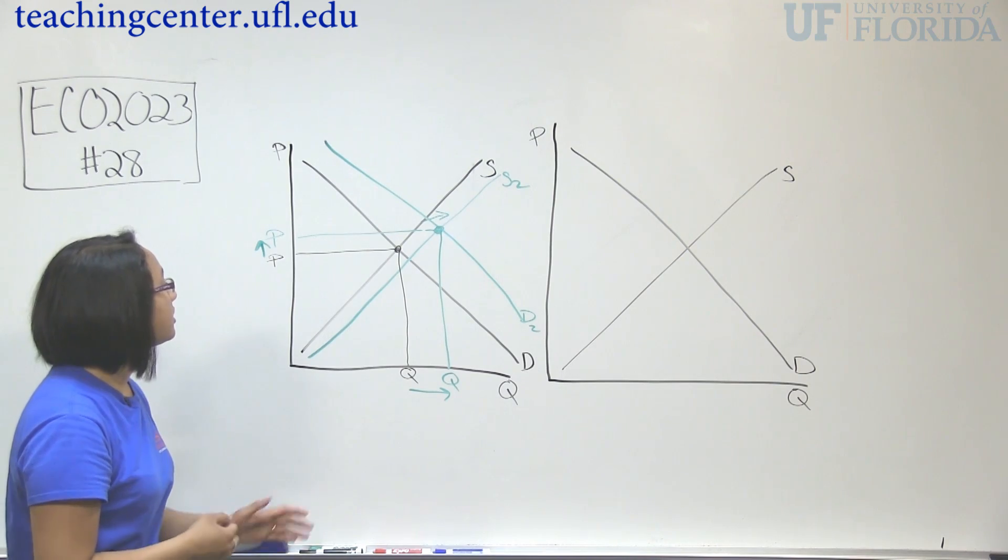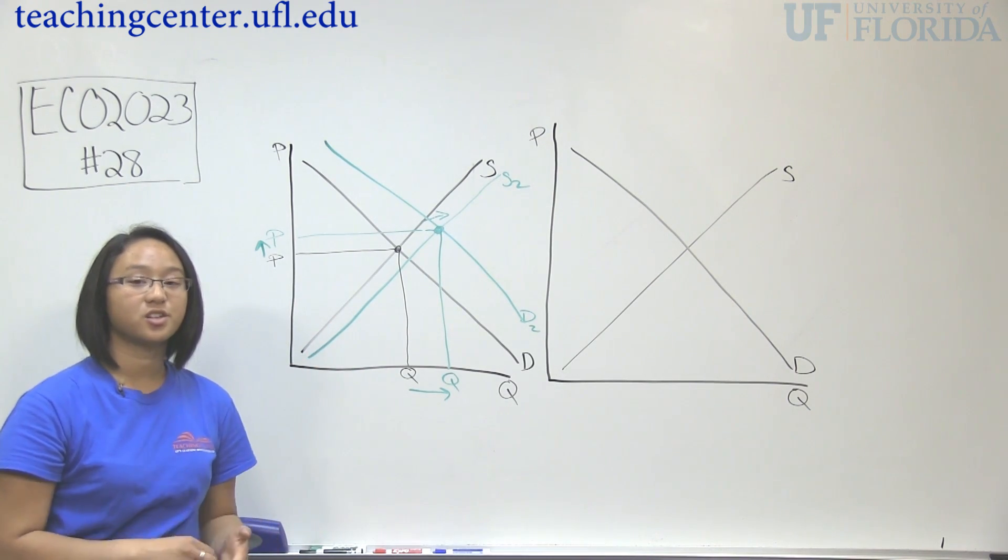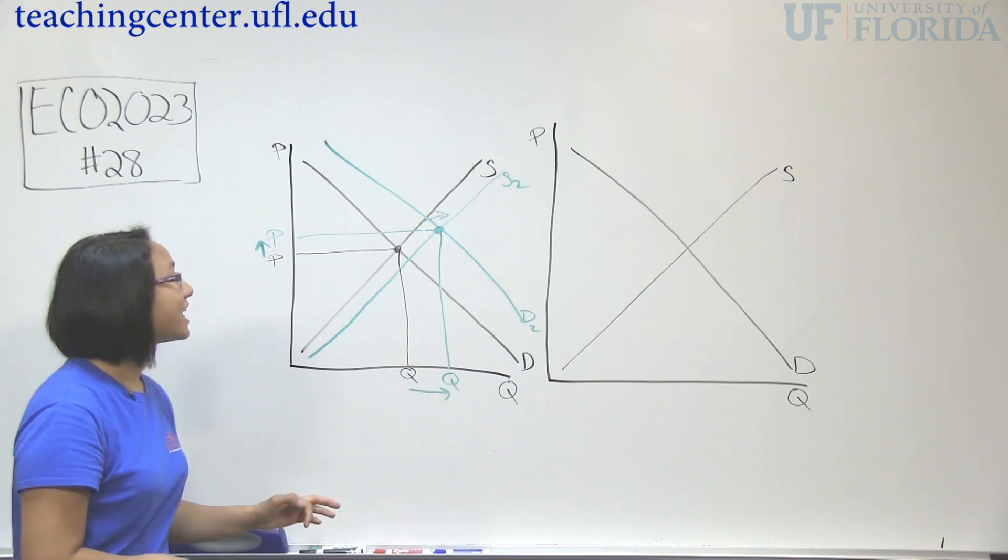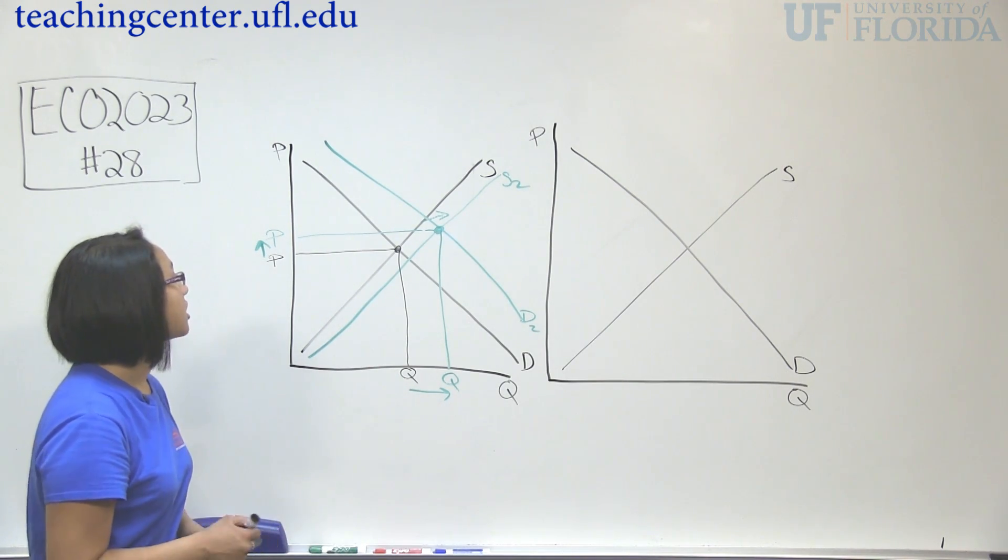Now, usually we would be done with this question. We would only have to draw one graph, but because it tells us there's two changes, but didn't tell us the magnitude of the change, we have to draw two graphs. And I'll show you why.